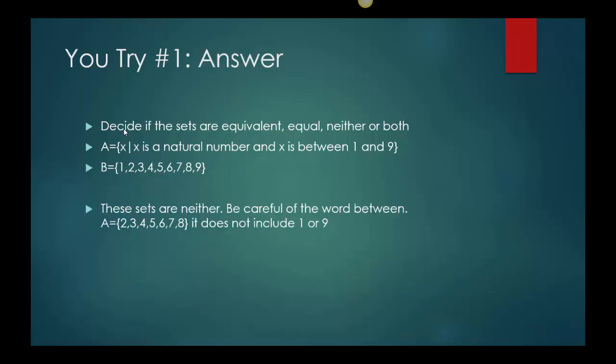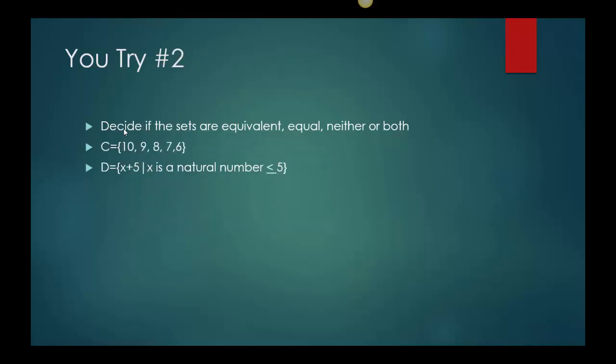So here's the answer: these sets are neither. You have to be really careful of the word 'between' because between would not include 1 or 9. A would just be {2,3,4,5,6,7,8}, so it's missing that 1 and 9. So they can't be equal, they don't have the same sets. They can't be equivalent because they don't have the same number of sets, so they're absolutely nothing.